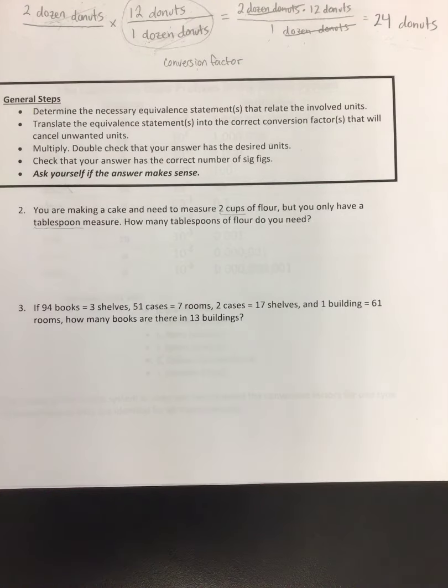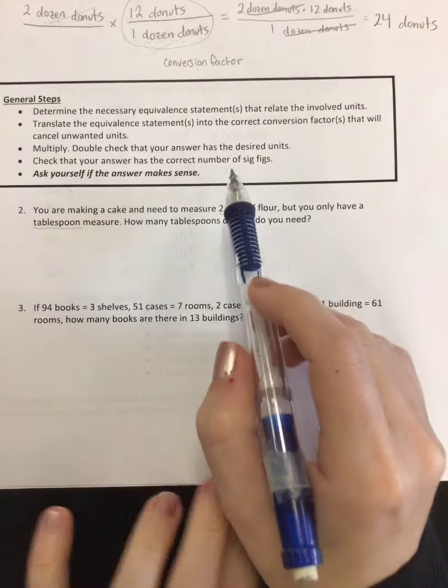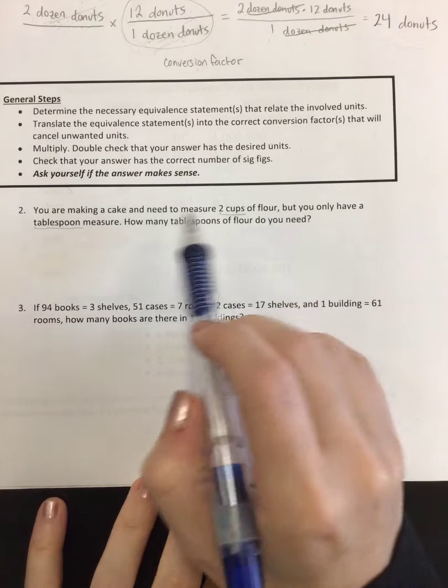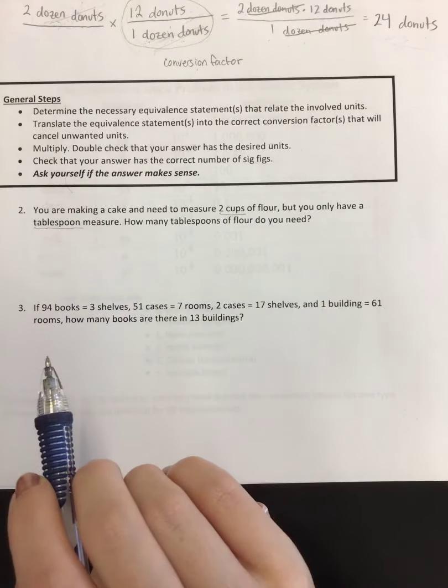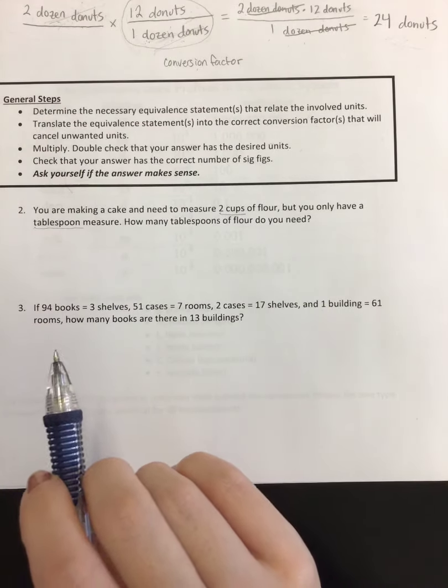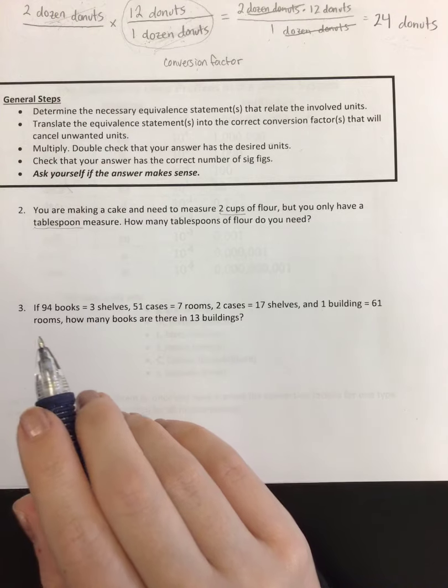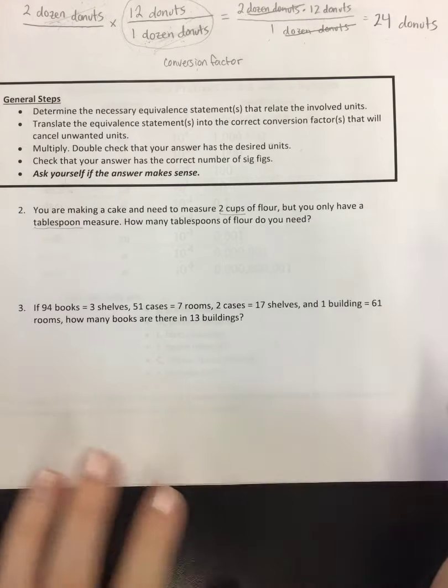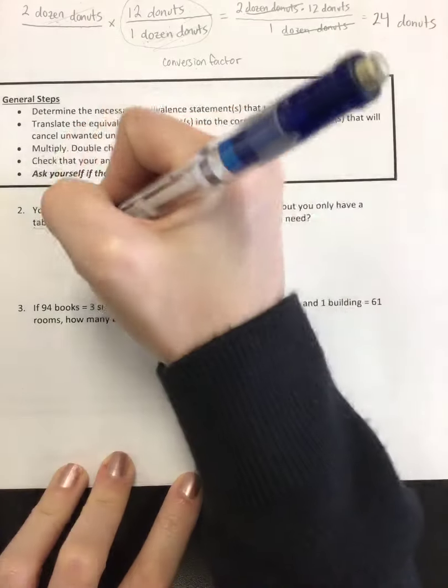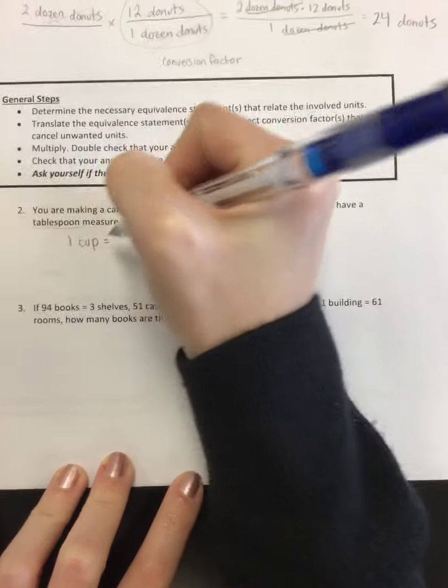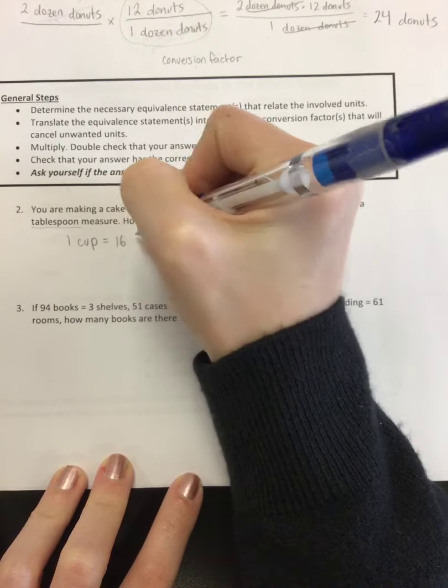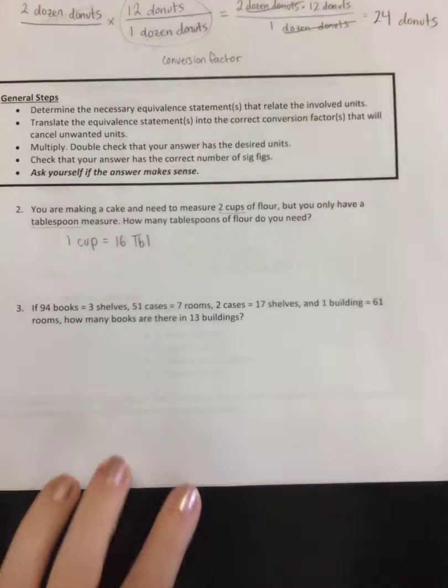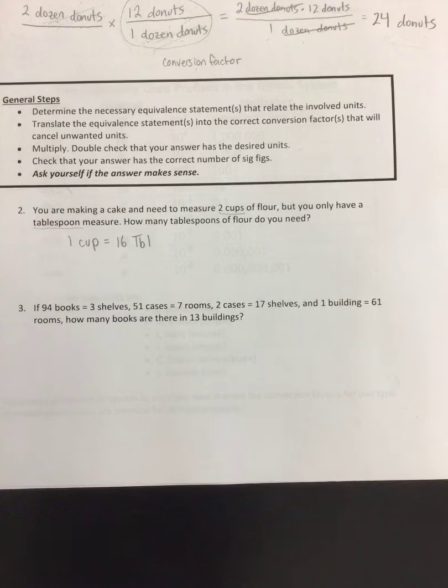Our first step is to determine the necessary equivalent statements. That means that we need to figure out the relationship between cups and tablespoons, which you might not know this off the top of your head, but could you look it up pretty easily? Yes, you could. In case you did not know, one cup is equal to 16 tablespoons. So that is my equivalence factor that I need.